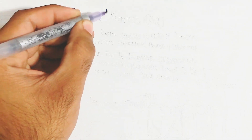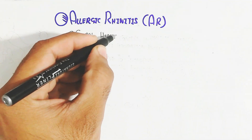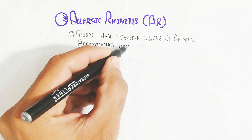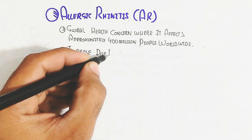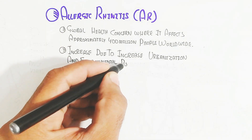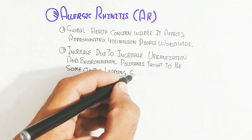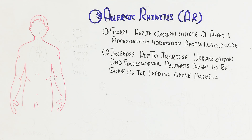In this video we will discuss allergic rhinitis, abbreviated as AR. It is a global health concern affecting approximately 400 million people worldwide. Allergic rhinitis is caused by allergic triggers and stimulation of immune cells, which in severe cases can be life-threatening. Its increase is linked to rising urbanization and environmental pollutants. We will understand the whole concept of allergic rhinitis, immune stimulation, and immune cell activation leading to inflammation.